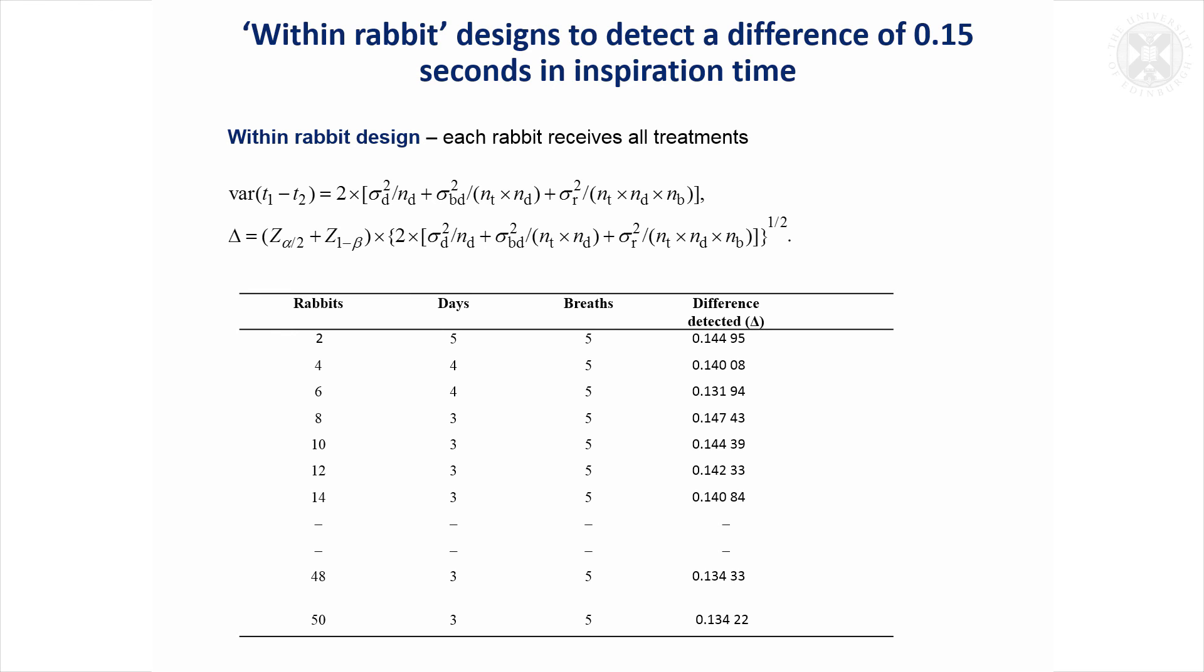It's possible to do simulations and to see how many rabbits and days would be satisfactory to achieve the objectives. This was really just to give a feel for the fact you can use variance components for planning studies and seeing what alternative designs would be available to achieve the objectives.